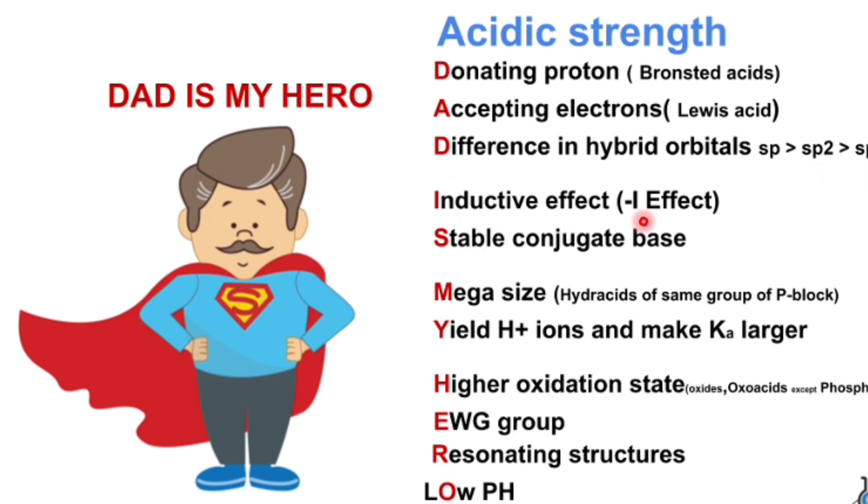I is inductive effect, that is minus I effect. S is stable conjugate base. M is mega size. Y is yield H plus ions and make Ka larger.